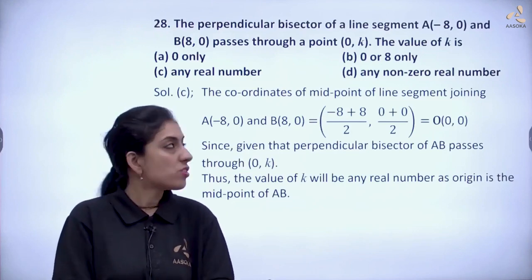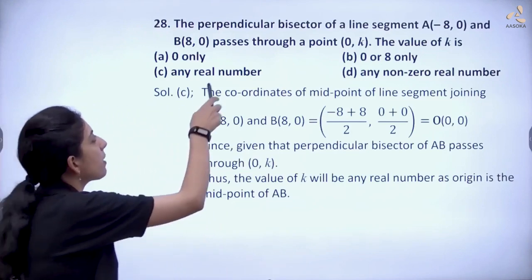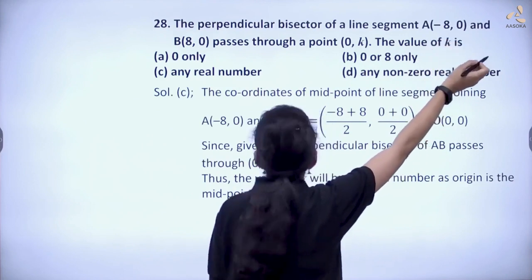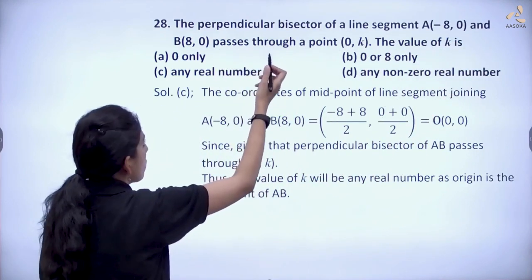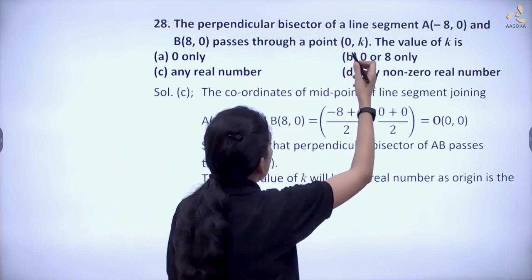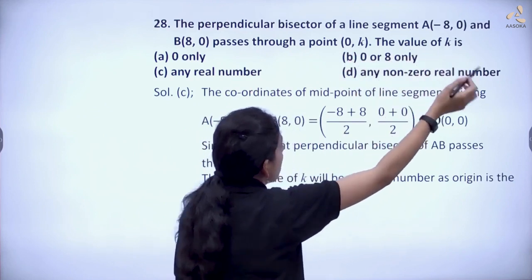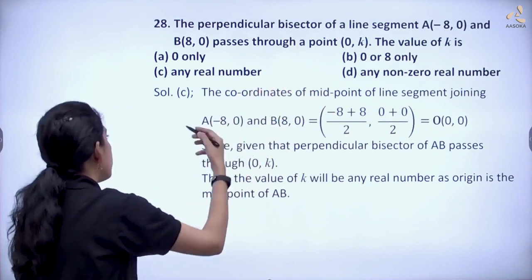So here is the 28th question which says that the perpendicular bisector of a line segment A(-8, 0) and B(8, 0) passes through a point (0, k). The value of k is... So first let's plot.